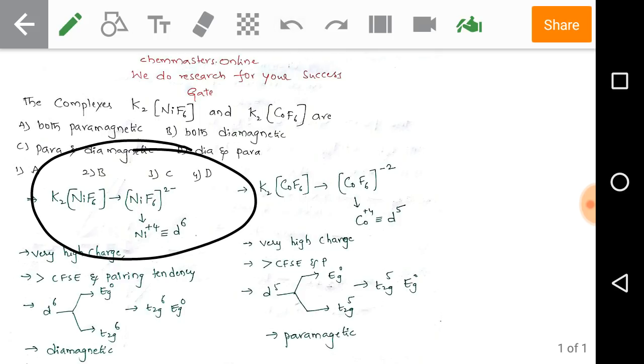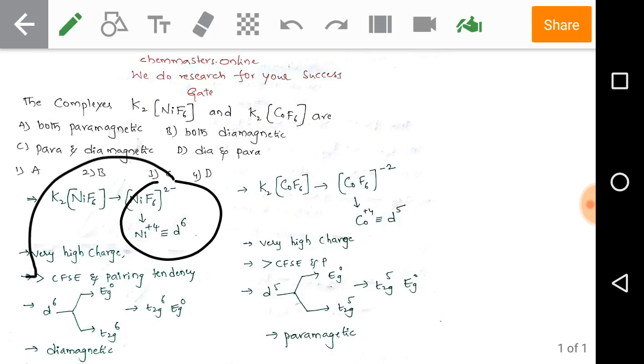When nickel is in the +4 oxidation state, it has 6 electrons in its d orbital. The very high charge on d-block metal elements leads to greater crystal field stabilization energy.